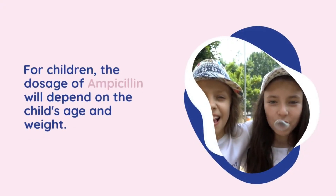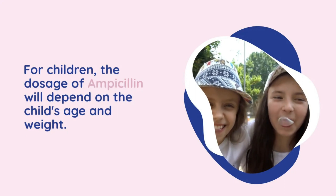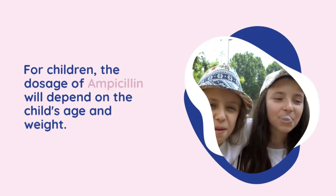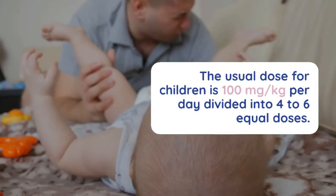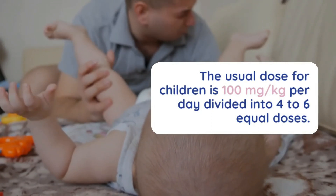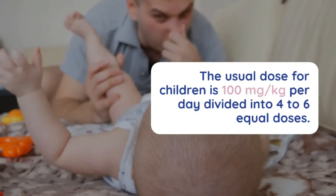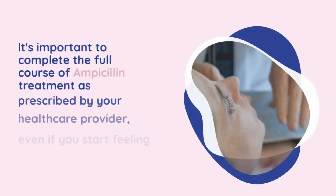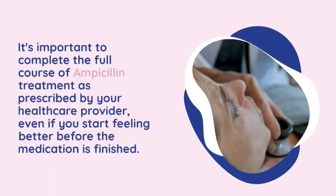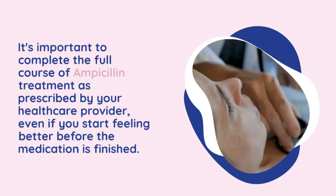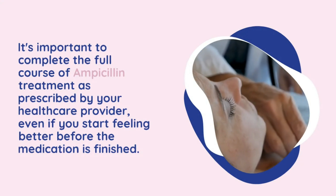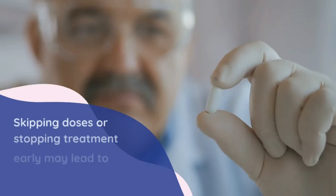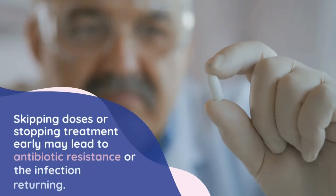For children, the dosage of ampicillin will depend on the child's age and weight. The usual dose for children is 100 milligrams per kilogram per day, divided into four to six equal doses. It's important to complete the full course of ampicillin treatment as prescribed by your health care provider, even if you start feeling better before the medication is finished.